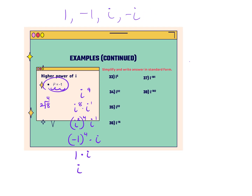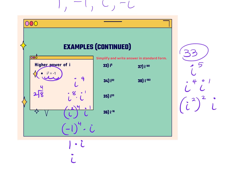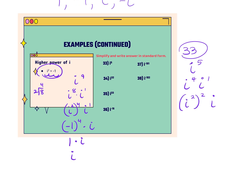For number 33, i to the fifth: make it i to the fourth times i to the first, then change the power of 4 to i squared raised to the second power — a power to a power means you multiply. This is equivalent to i to the fifth. Change i squared to negative 1. It's raised to an even power, so negative 1 times negative 1 is positive 1. Then times i, and the final answer is i.